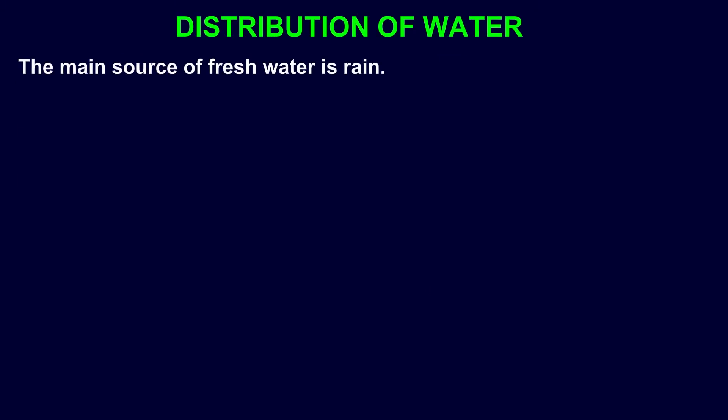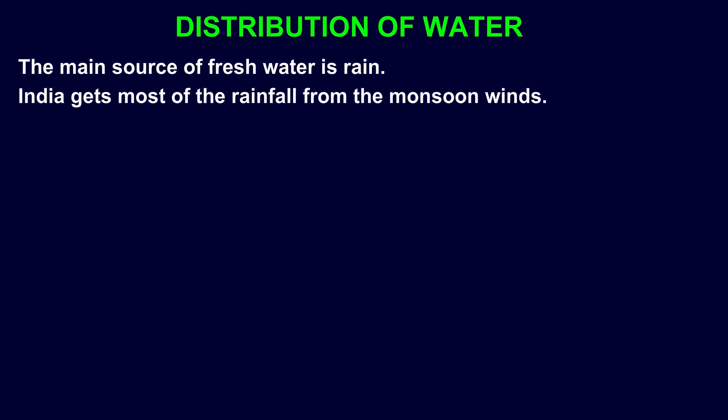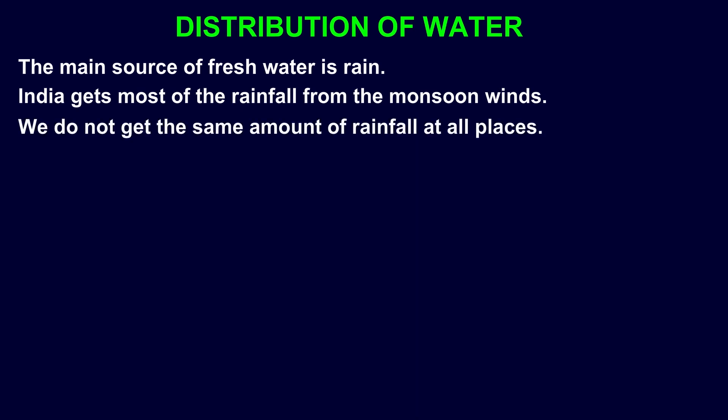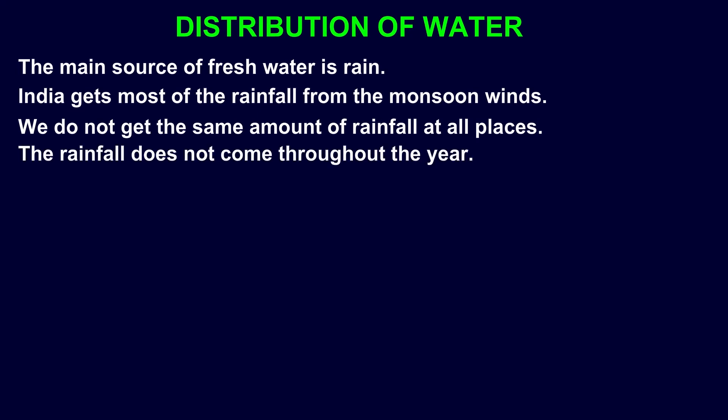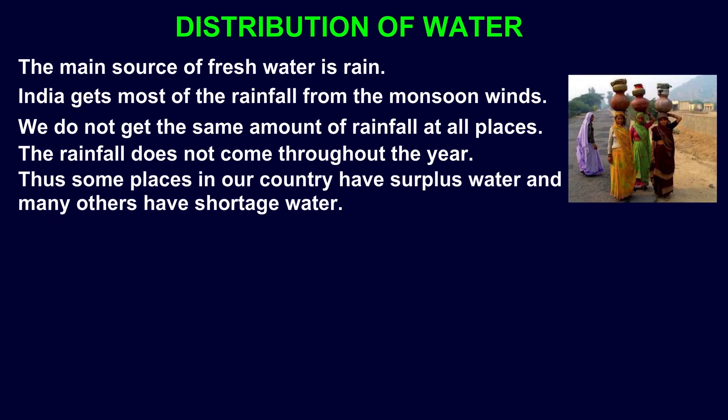Distribution of Water. The main source of freshwater is rain. India gets most of the rainfall from the monsoon winds. We do not get the same amount of rainfall at all places, and the rainfall does not come throughout the year. Thus, some places in our country have surplus water and many others have a shortage.